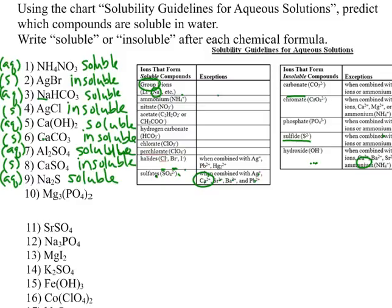Number 10: Mg3(PO4)2, magnesium phosphate. We have a rule for phosphates — phosphates are insoluble, except when they are with a Group 1 ion or ammonium. That is not the case here, so magnesium phosphate is insoluble. Pause the video to try numbers 11 through 20, and when you unpause the video, the answers will be on the screen.